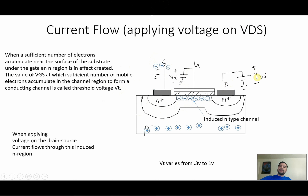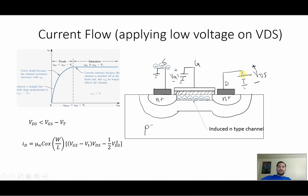So let's say we apply a small VDS. You're going to have conduction from the source to the drain of the negative charges. You're still going to have a depletion region right here. The threshold voltage usually varies from 0.3 volts to 1 volt. That's what happens when you apply a small voltage on VDS and you have a VGS gate voltage greater than the threshold voltage.